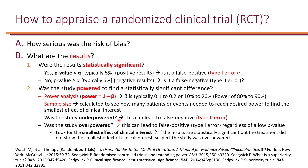Sometimes when results are statistically significant, it could be due to being overpowered. If you have too many patients or too many events, you can find a statistically significant difference between groups, but it might be smaller than the smallest effect of clinical interest. For example, if you conduct a study comparing two drugs and you're interested in a reduction in mortality of at least 10%, but the drug only reduced mortality by 2%, that didn't reach the minimum 10% of interest — this can be due to being overpowered.